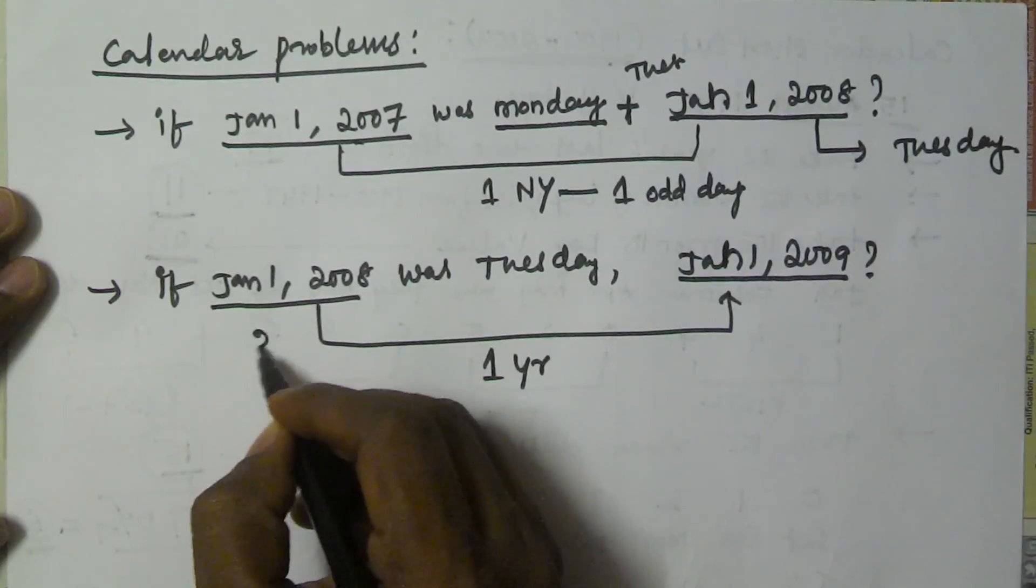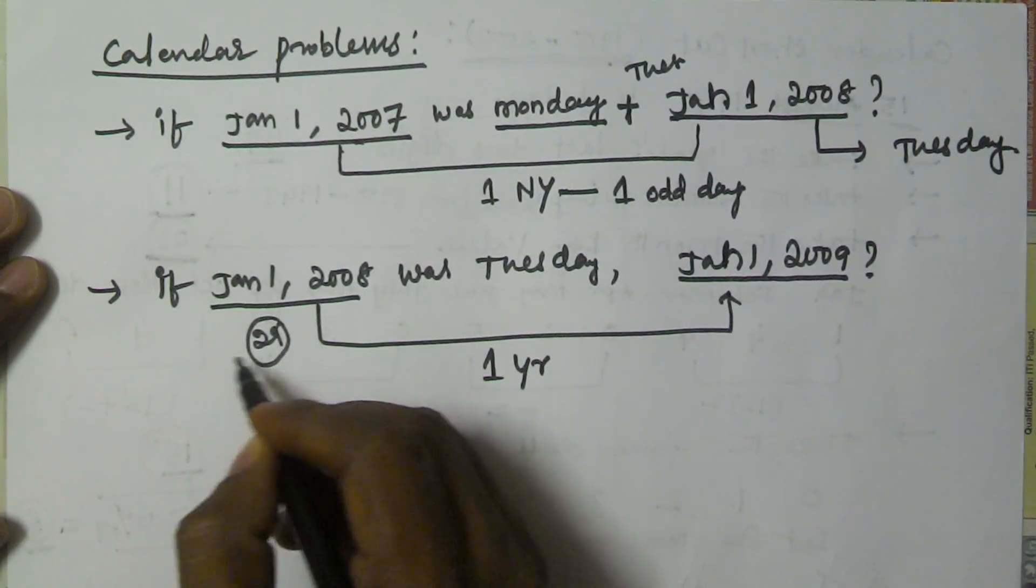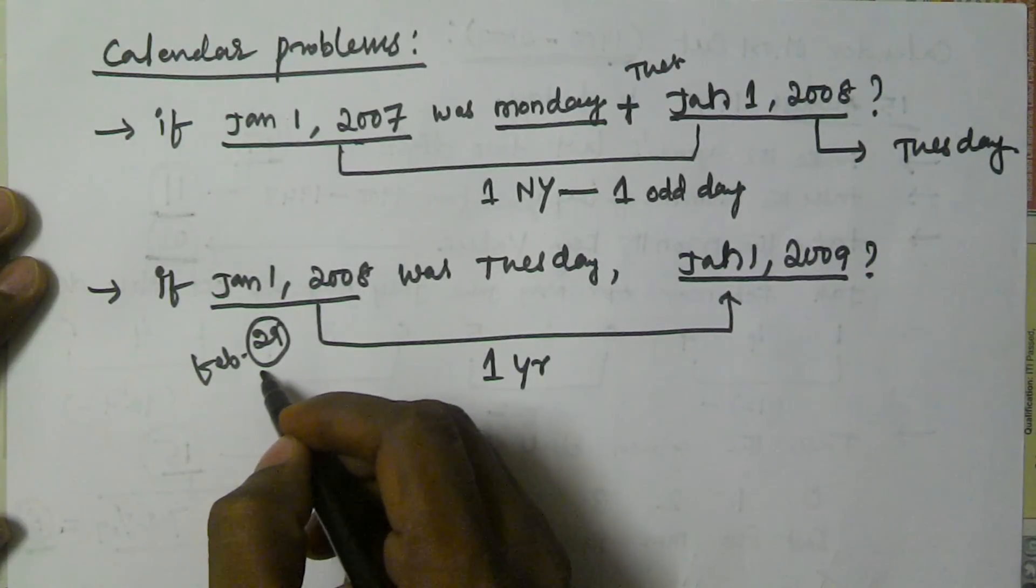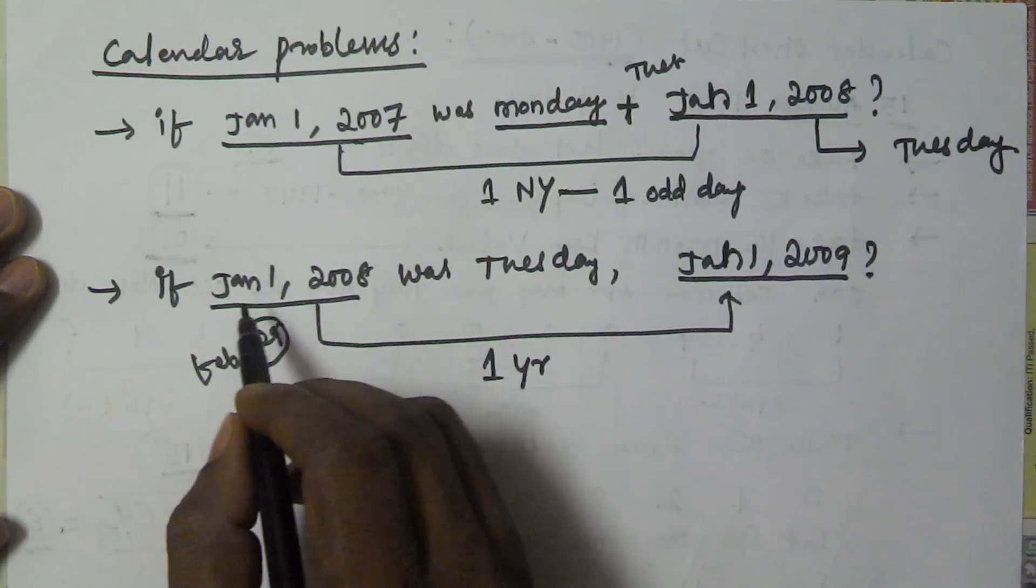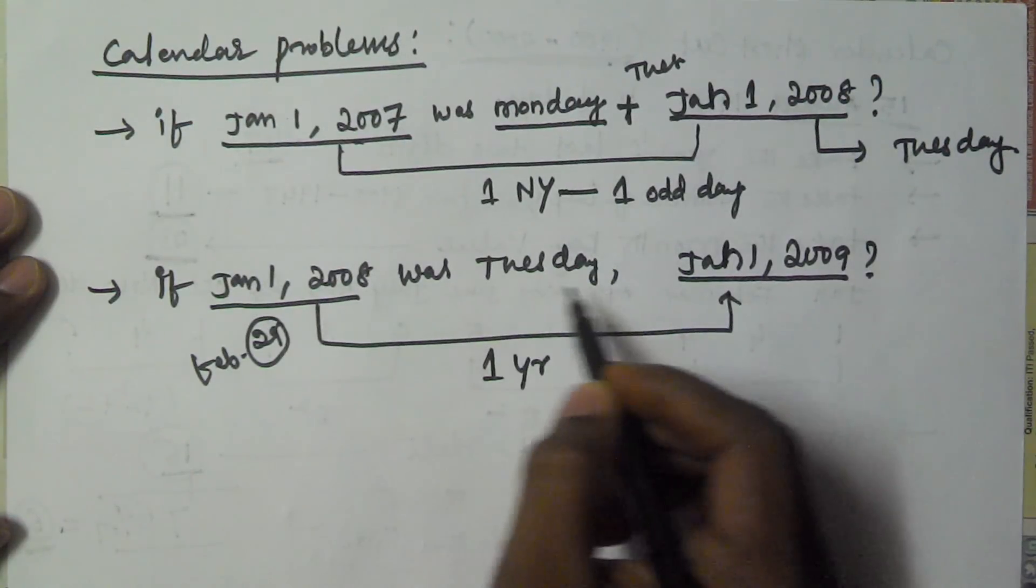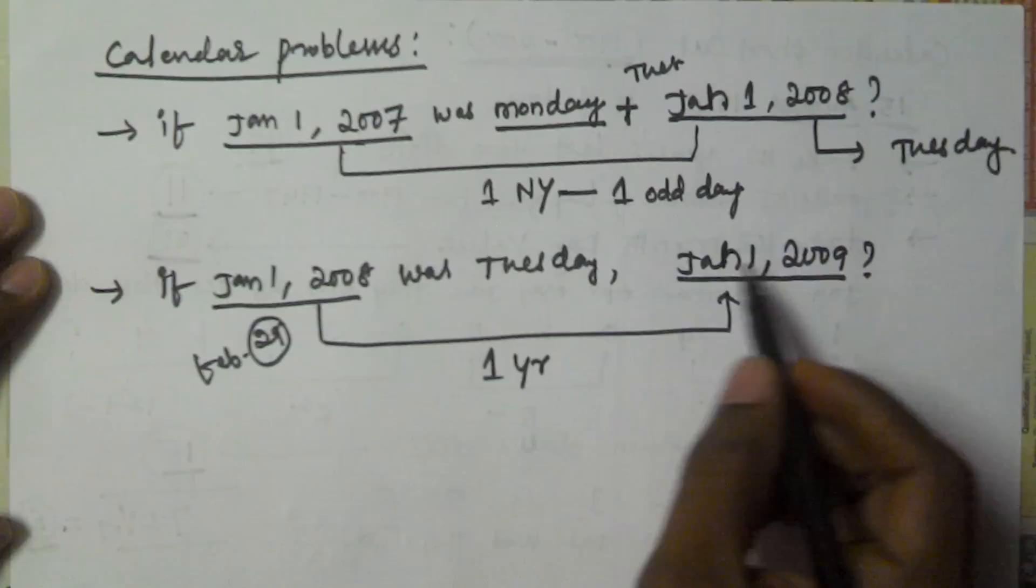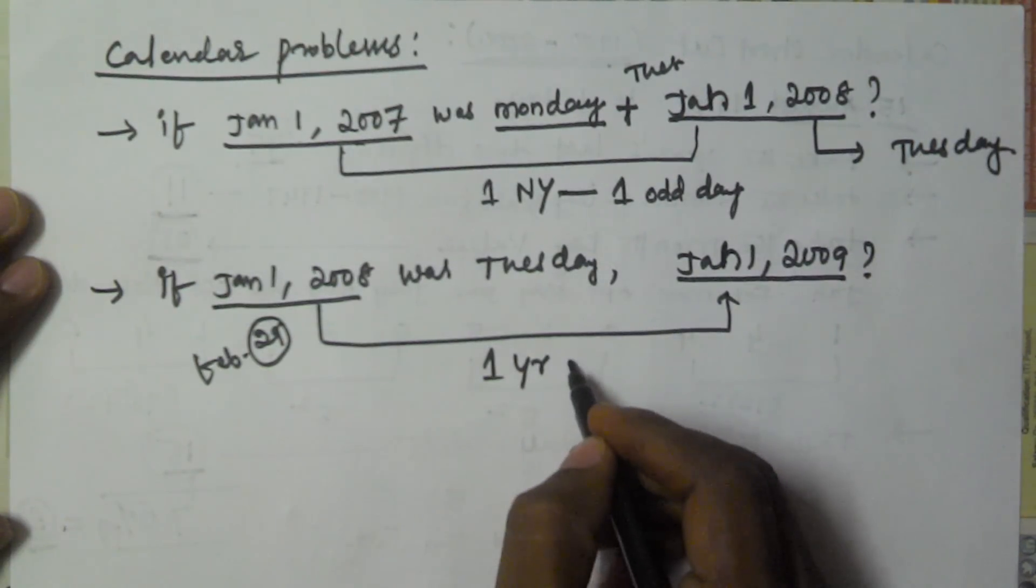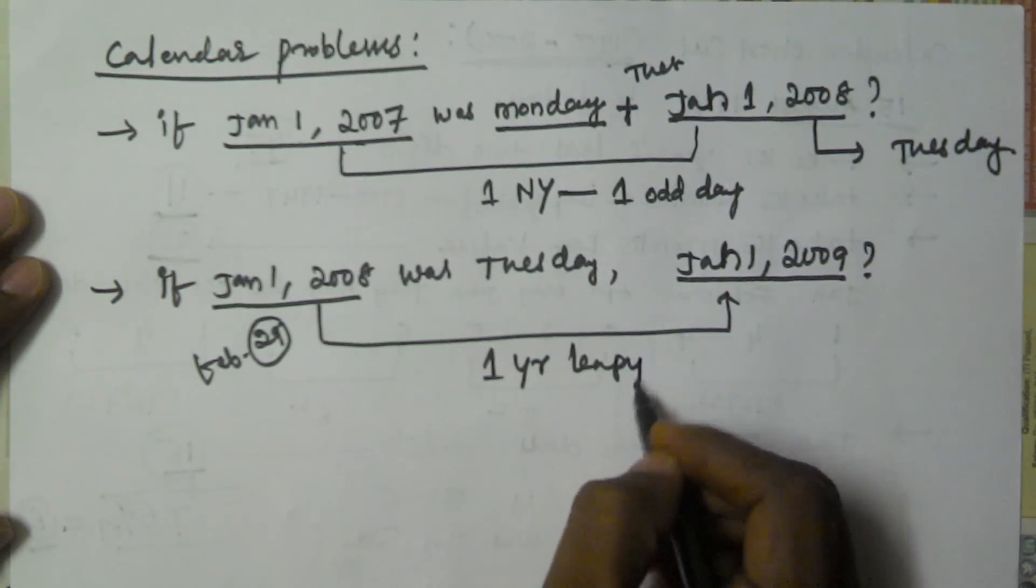And in February, it is going to contain 29 days. February is going to contain 29 days. So that's why from this duration, January 1st, 2008 to January 1st, 2009 is going to contain a year which is a leap year.